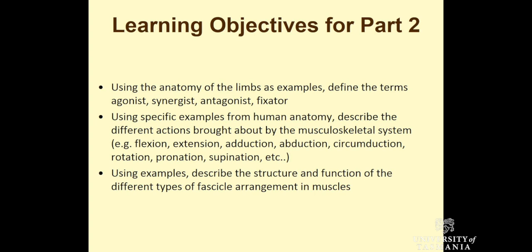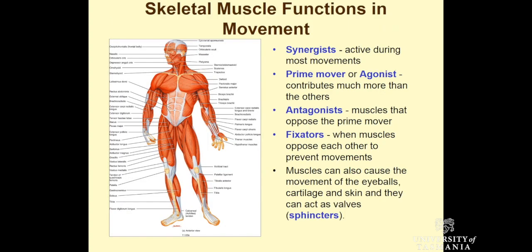And then lastly, using examples, describe the structure and function of the different types of fascicle arrangement in muscles. So in general terms, we've got these terms related to functions and movement of the different skeletal muscle systems.